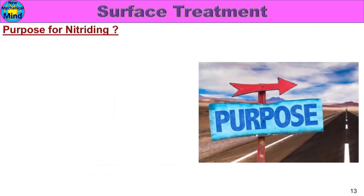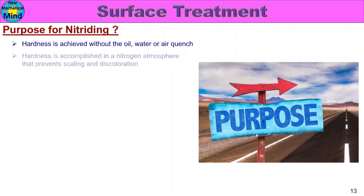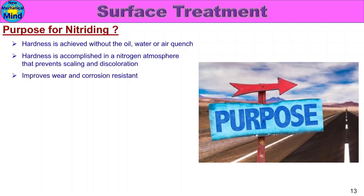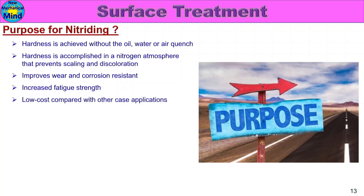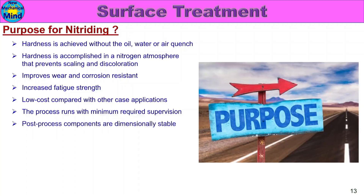The purpose of nitriding: hardness is achieved without the use of oil, water, or air quenching. Hardness is accomplished in a nitrogen atmosphere that prevents scaling and discoloration. It improves wear and corrosion resistance, increases fatigue strength, and offers low cost compared with other case hardening applications. The process runs with minimum required supervision and is a simple process.